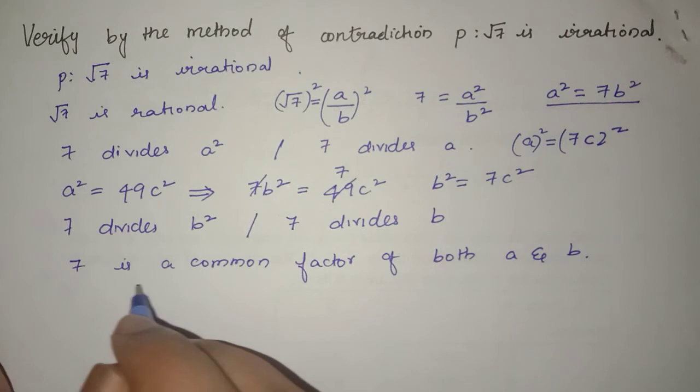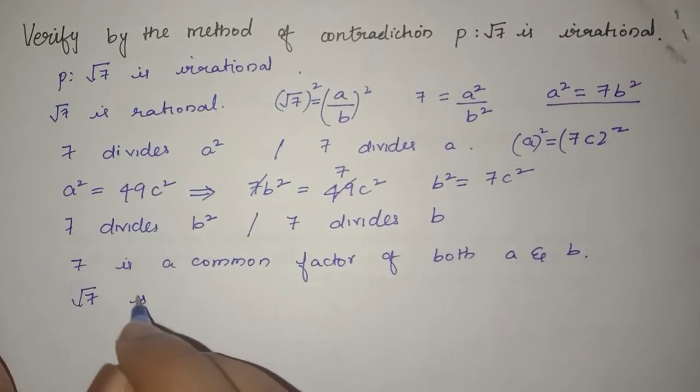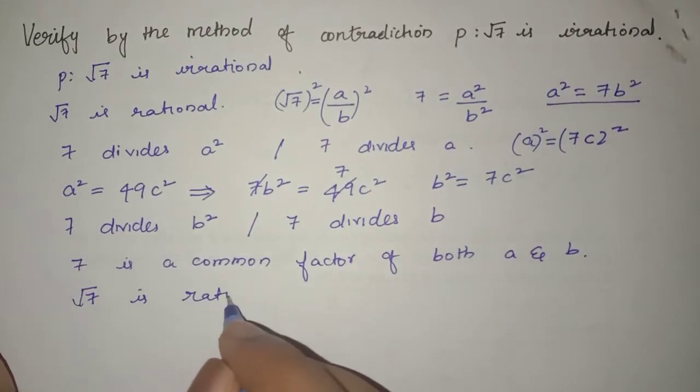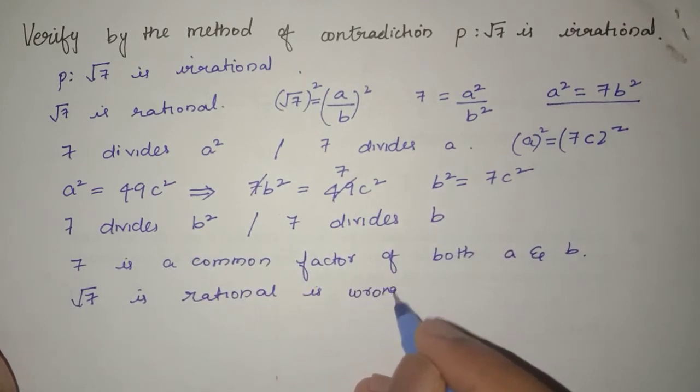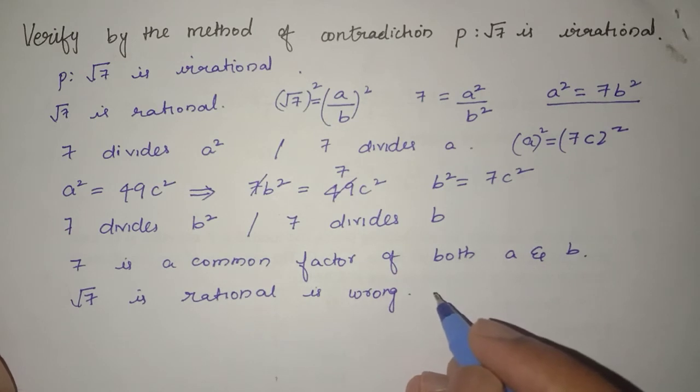So our assumption that root 7 is rational is wrong. Hence the statement that root 7 is irrational is true.